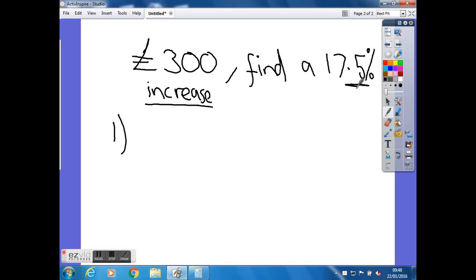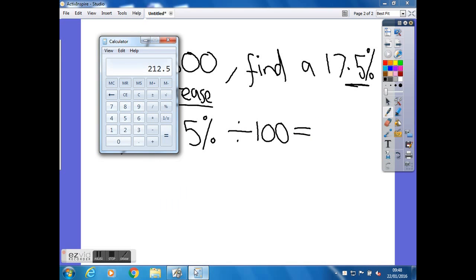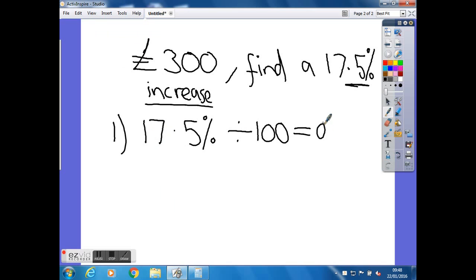So our first step, like we did last time, was just to transfer the percentage to a decimal, and that was to divide it by 100. Again always remember you can use your calculator for these, you don't have to do it in your head. So 17.5 divided by 100, so we get 0.175. And again like I was saying before, it looks like the same number but just with a 0 point in front of it. So that's our decimal.